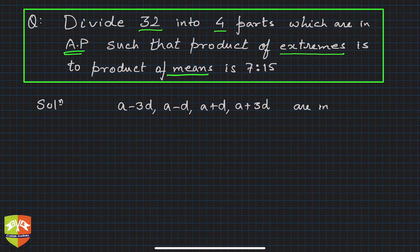It's not mandatory to start like this - you can start with a, a plus d, a plus 2d, a plus 3d. But whenever the sum of terms is given, which is clearly here since we break 32 into four parts, it's always advisable to take terms in this format rather than simply a, a plus d, a plus 2d, a plus 3d, because it eases calculations and you can eliminate one variable very easily.